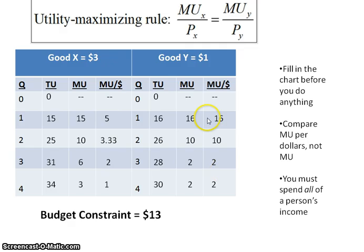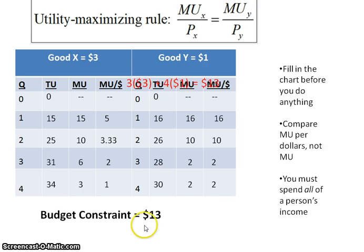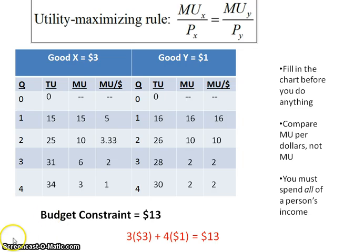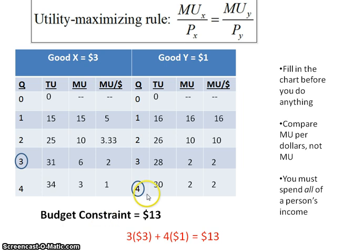Now I need to look at those marginal utilities per dollar of $2 and figure out how to spend $13. If I buy 3 units of good X at $3 each, that's $9 spent. That leaves $4. If I buy 3 units of good Y at $1 each, that's $12 total — the budget constraint isn't satisfied. But if I buy 3 units of good X at $3 ($9) and 4 units of good Y at $1 ($4), that's $13. The ratios match and the budget constraint is satisfied — so the answer is 3 units of good X and 4 units of good Y.